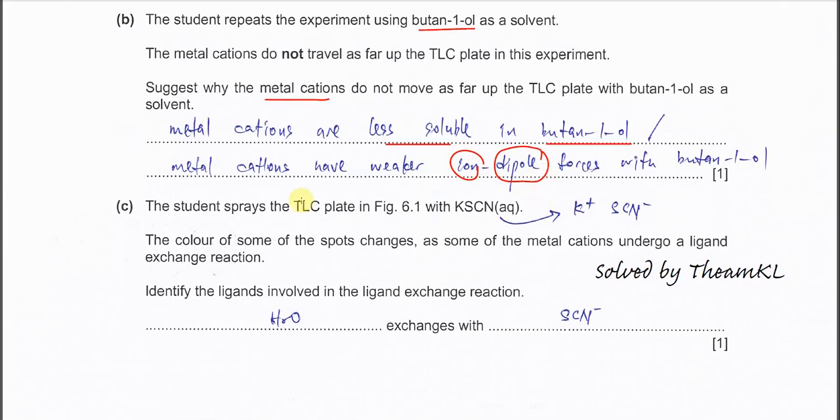The student sprays the TLC plate in figure 6.1 with KSCN solution. In this solution, this is the ligand. The color of some spots change as some of the metal cations undergo ligand exchange. Identify the ligand involved in the ligand exchange. Initially, all will be the ligand water, and the water now exchanges with the new ligand, SCN negative.